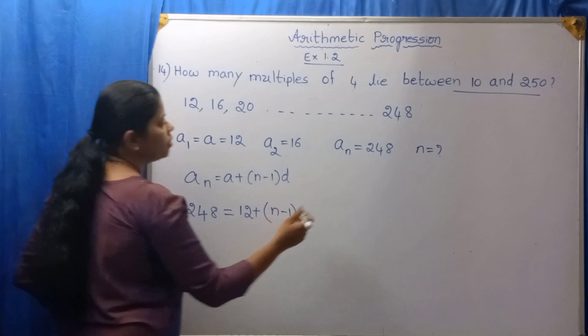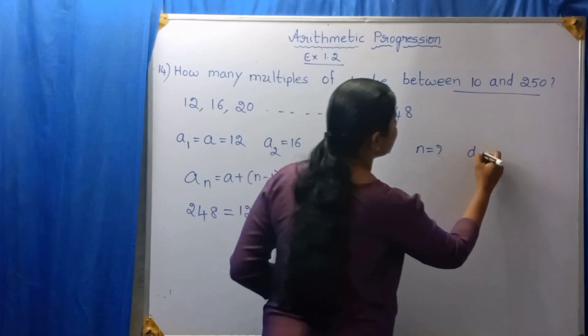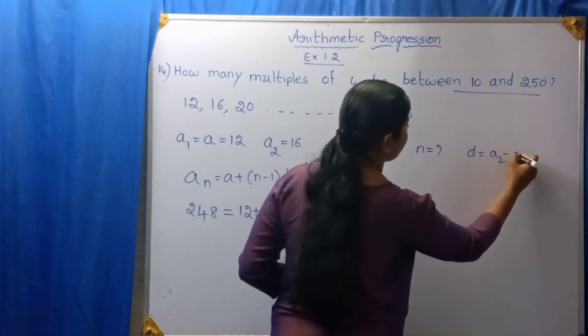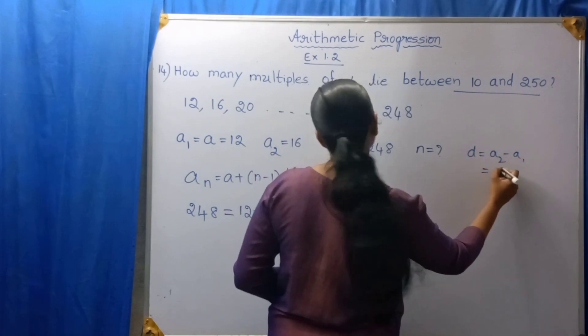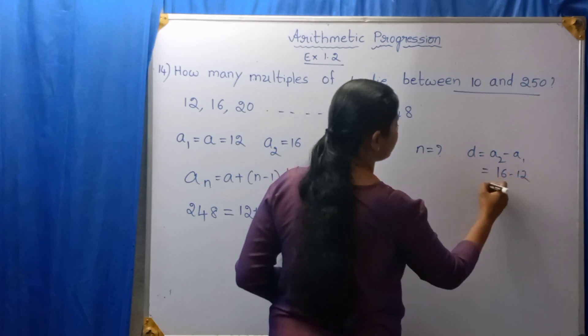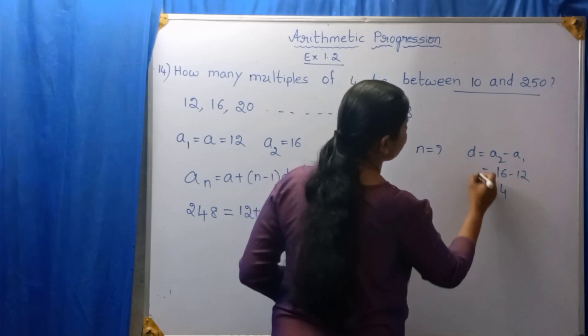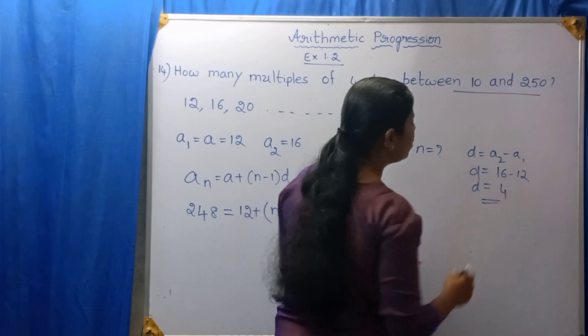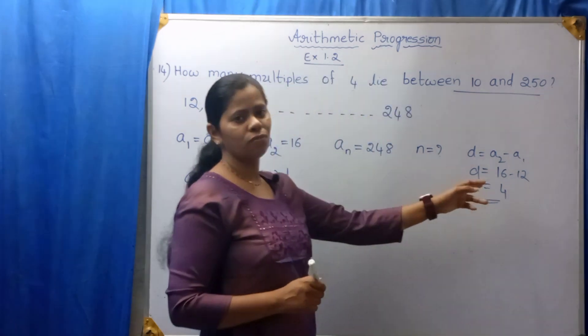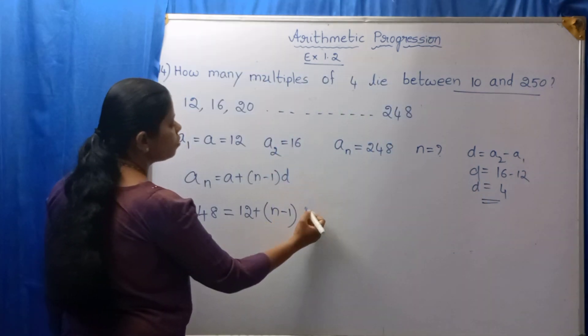d is equal to A₂ minus A₁, right? That is, A₂ is 16 minus 12. d is 4. You can write directly d is equal to 4. Therefore, d is 4.